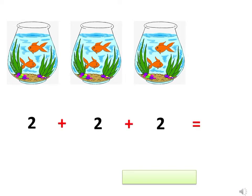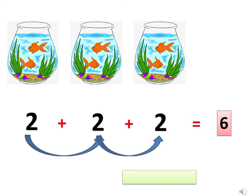That is 2 plus 2 plus 2 which is equal to 6. There are 6 fish in all. Adding 2 three times is called repeated addition.